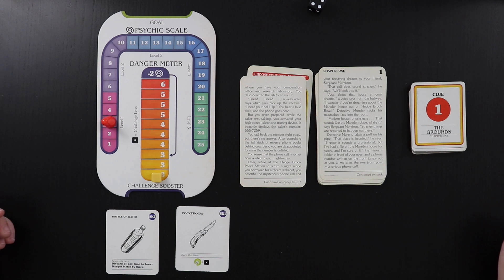You sense that the phone call is somehow related to your nightmares. Later, while at the Hedgebrook Police Station to return a night scope you borrowed for a recent stakeout, what is our life even like? You describe the mysterious phone call and your recurring dreams to your friend, Sergeant Morrison.